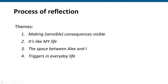In terms of the process of reflection, there were four themes. The first is making sensible consequences visible — ensuring the game communicates what the effects of players' actions might be, and that those effects make sense to players. The second, 'it's like my life,' is about relevance — how much players could connect the game to their personal life. The third, 'the space between Alex and I,' was only relevant to the Alex version. The fourth, triggers in everyday life, was about how reflection often required something to happen outside the game.